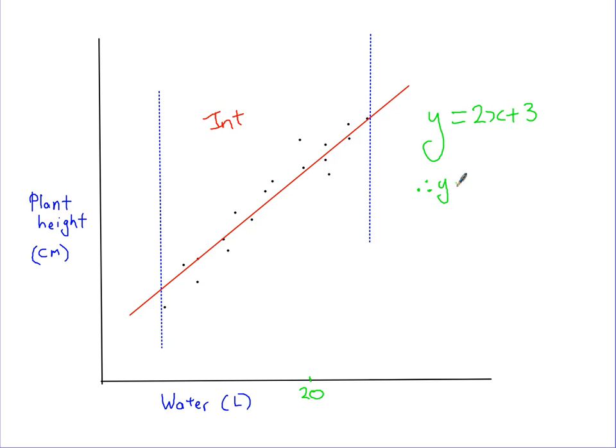Therefore, y equals 2 times 20, because that's the amount of litres we put on, plus 3. So that gives us 43 centimetres. If we put 20 litres of water on it, we can expect our plant to grow to 43 centimetres.